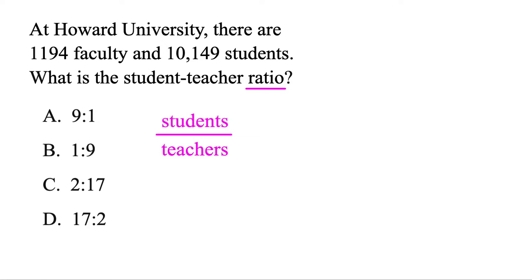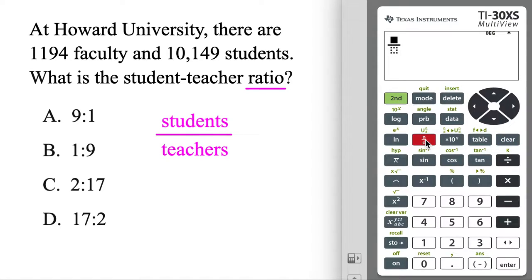And then we could break out the calculator because there's a nice fraction button here. We're going to put the students up top, so we'll put 10,149, and then over the faculty or the teachers, 1194. Okay, but surprisingly when you hit enter, you're done.